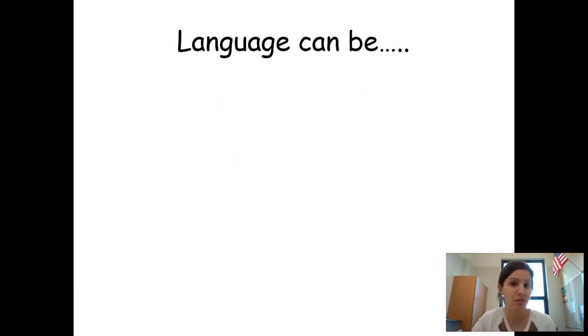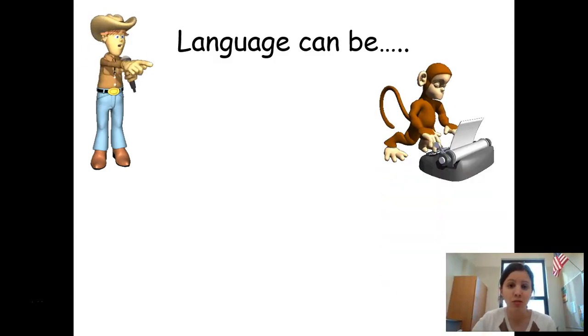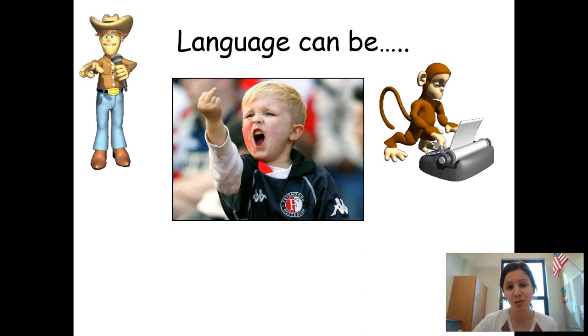So we know that language can be several different things. We know that language can be spoken. We know that language can also be written. And there's controversies with this. You can type, you can write in print, or you can write in cursive. And we have controversy today in schools with should schools teach cursive or should they not teach cursive? We went through this big movement within the last few years of schools were getting rid of cursive. They weren't allowing their students to learn it. But now it's starting to come back because psychologists are realizing there's some cognitive value to teaching students how to write in cursive. And then finally, we know that language can also be symbolic.